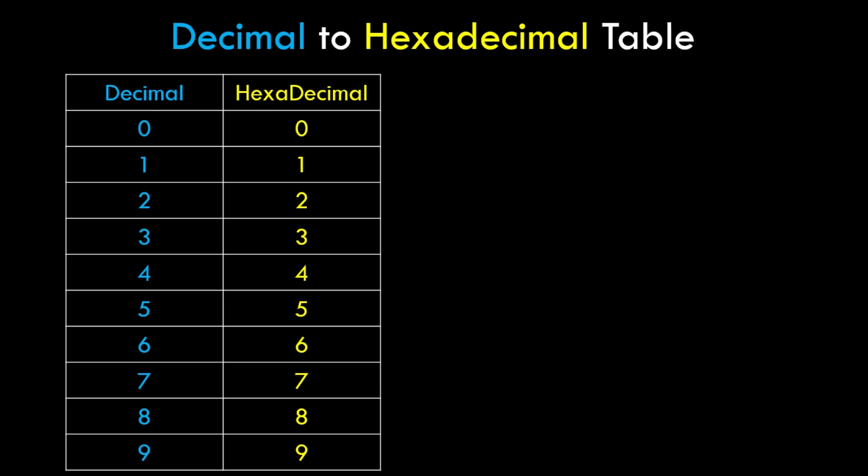In the first table we have 0 to 9, that is 10 values in decimal, and the corresponding values in hexadecimal. As you can see, 0 to 9 in decimal is equal to 0 to 9 in hexadecimal. When we convert any value between 0 to 9 from decimal to hexadecimal, the value remains the same.